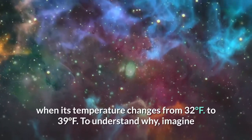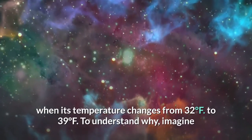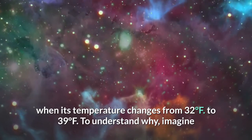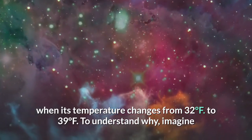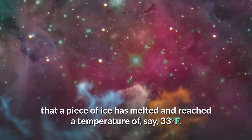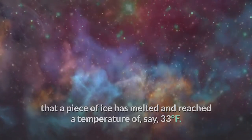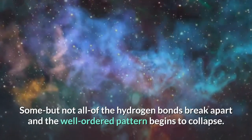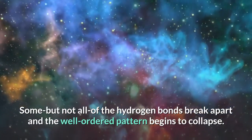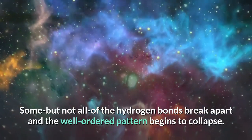When its temperature changes from 32 degrees Fahrenheit to 39 degrees Fahrenheit, to understand why, imagine that a piece of ice has melted and reached a temperature of, say, 33 degrees Fahrenheit. Some, but not all, of the hydrogen bonds break apart and the well-ordered pattern begins to collapse.